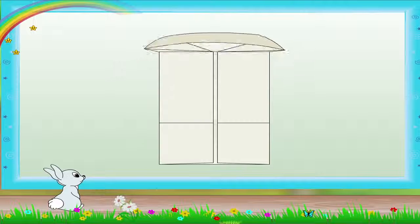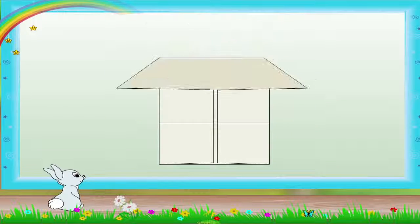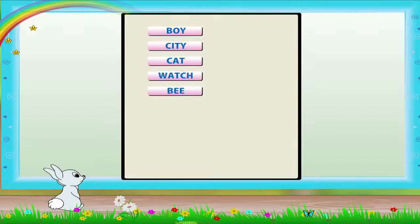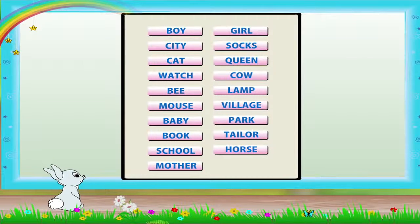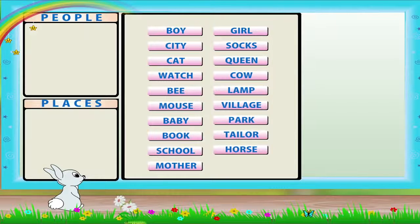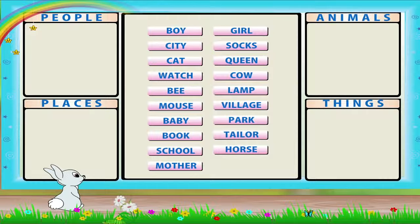Let us do an activity. There are some nouns in this box. Put the nouns in the correct groups: people, places, animals and things.